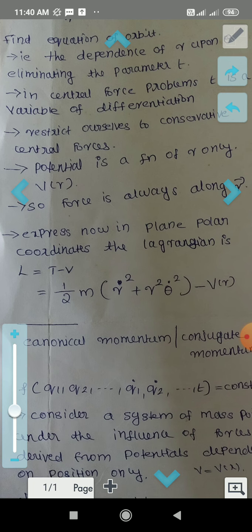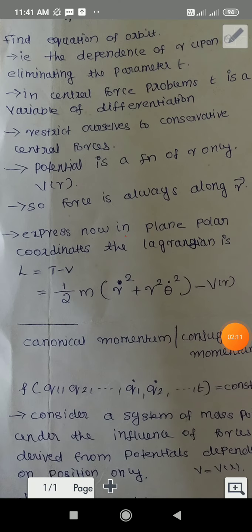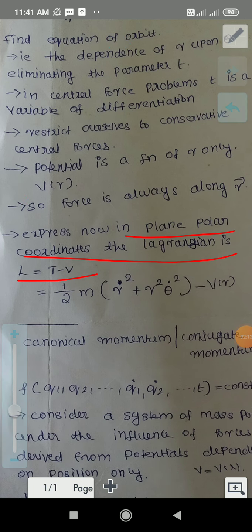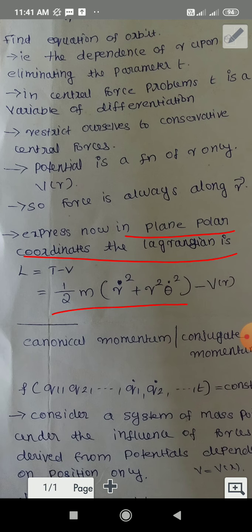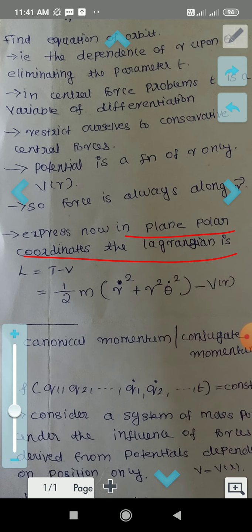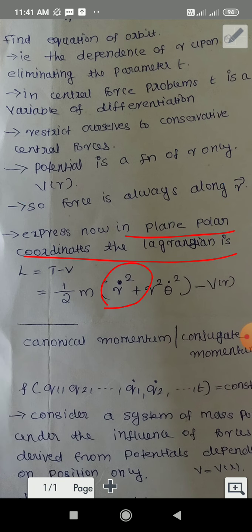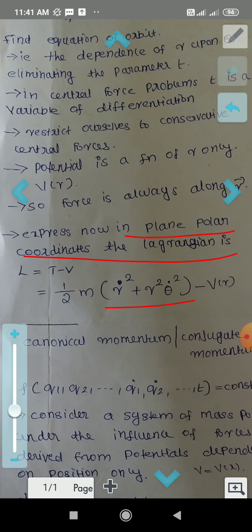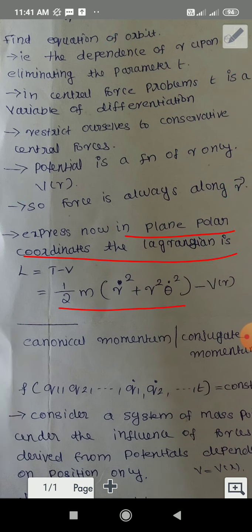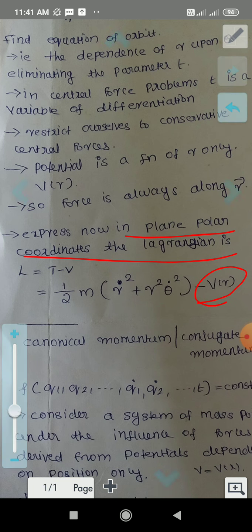In terms of plane polar coordinates, the Lagrangian L is equal to T minus V. The kinetic energy T is half m v squared. In polar coordinates, v squared equals R-dot squared plus R squared times theta-dot squared. So the Lagrangian is: L equals half m times (R-dot squared plus R squared theta-dot squared) minus V of R, since the potential is a function of R only.